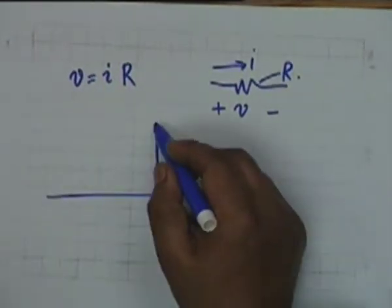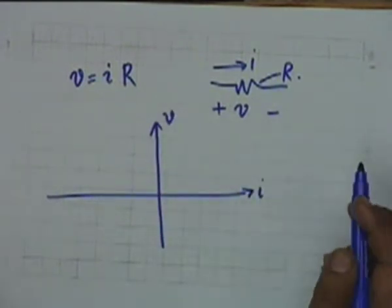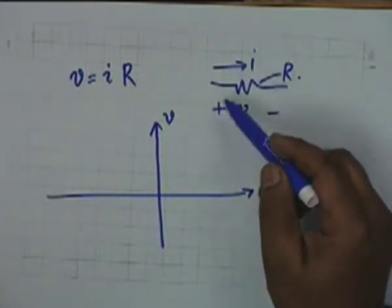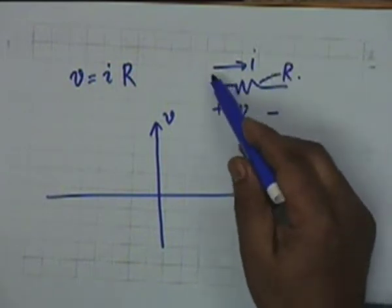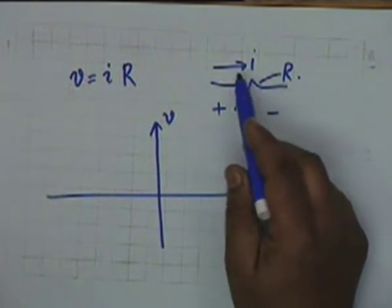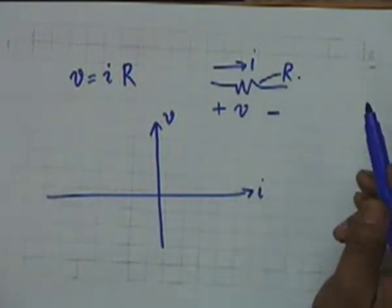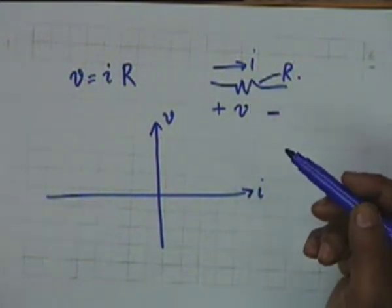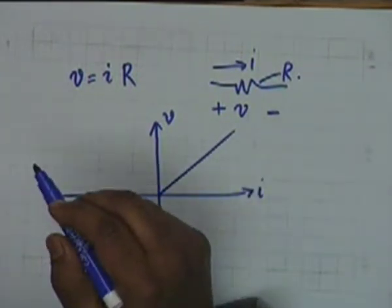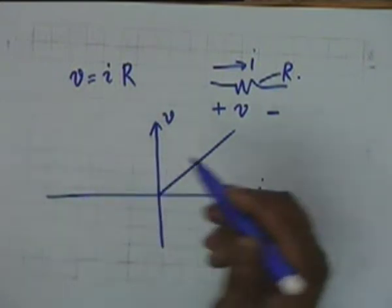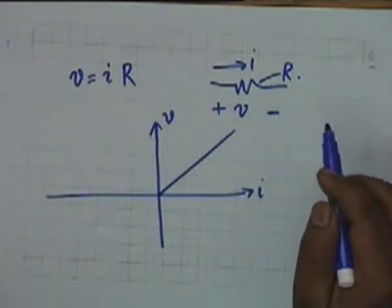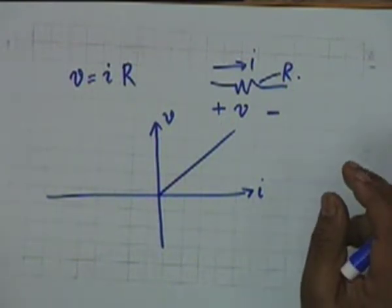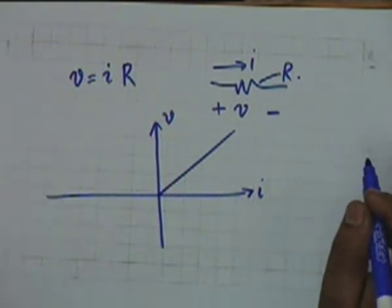If it is a linear resistance, then if you plot V versus I, note the polarity: V is considered positive in the direction from where the current originates, and the other terminal is considered negative. The relation between V and I shall be only in the first quadrant, and it shall be a straight line whose slope is equal to R. If this relationship becomes non-linear, then we say the resistance is non-linear. Most of the time, we shall be concerned with linear resistances.